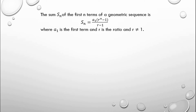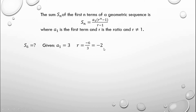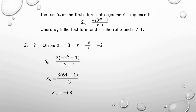The sum of the first 6 terms is unknown. The given is a sub 1 equals 3, and the ratio r is negative 2. To find the ratio, divide the right number by the one to its left: negative 6 divided by 3 gives negative 2, or 12 divided by negative 6 also gives negative 2. Substituting into the formula: 3 times negative 2 raised to 6 minus 1, over negative 2 minus 1, gives negative 63. The answer is letter A.